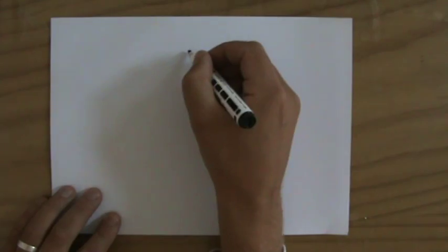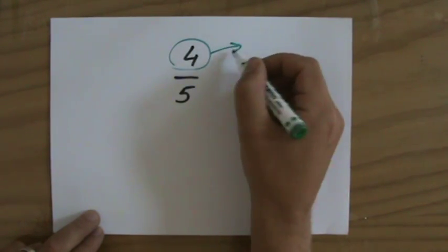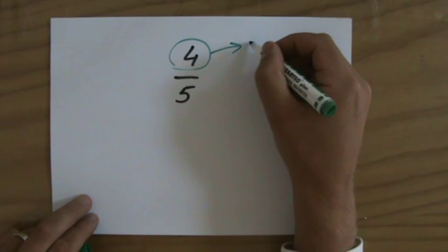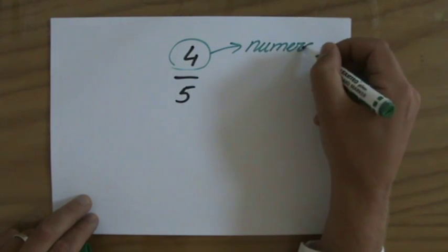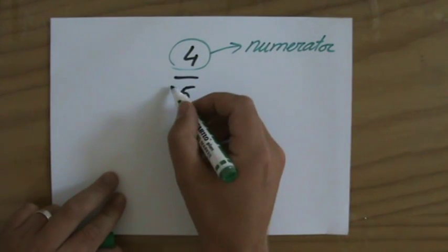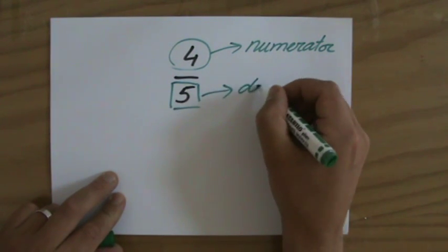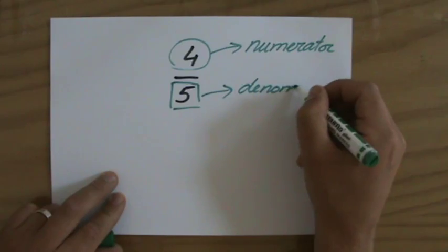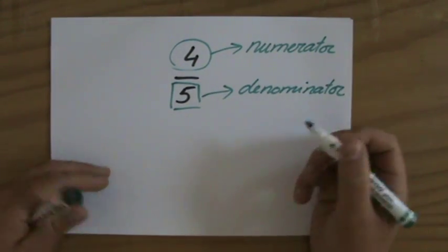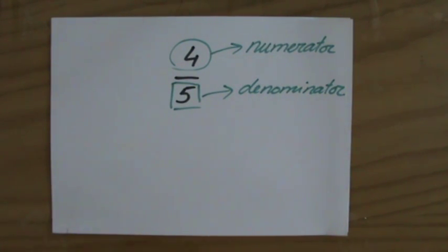If I have a fraction, for instance 4 over 5, 4 divided by 5, then we call the top part, and we'll put a circle around that, the numerator. That's a word you need to be familiar with. The divisor, that bottom part, we put a square around that, we call that the denominator. So we have the numerator at the top and the denominator at the bottom.